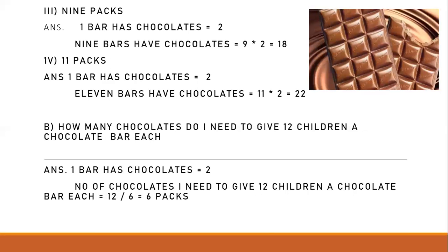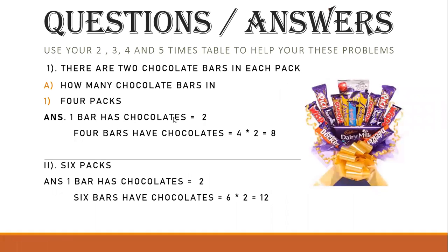Nine packs — if each pack has two bars of chocolates, then nine packs will have nine times two, which equals eighteen chocolates. Then we have eleven packs — if each packet has two chocolates, how many chocolates will eleven packs have? Eleven multiplied by two equals twenty-two. You just take the number given in the question and multiply it by two.